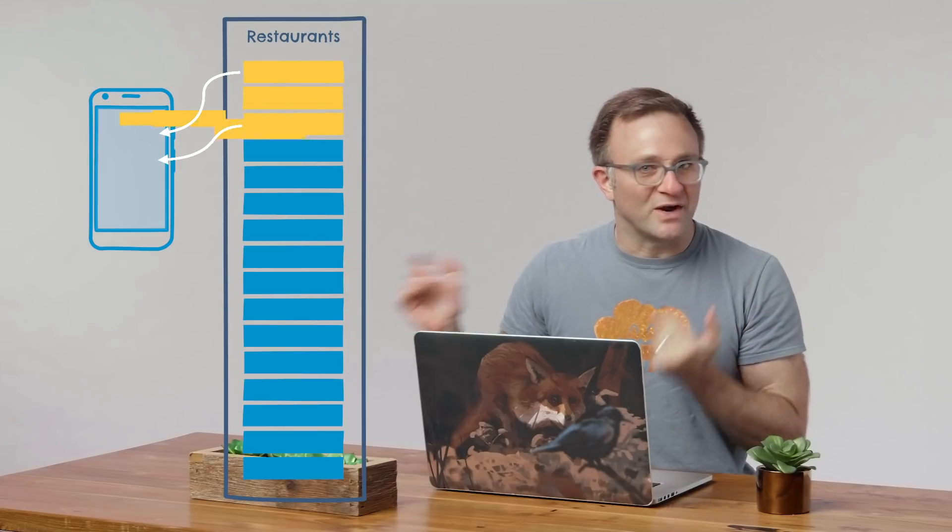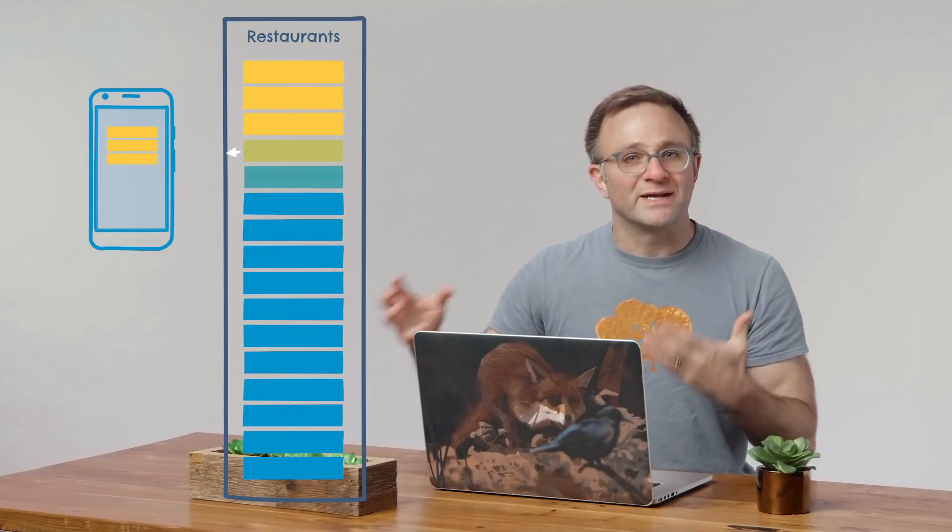So a much better solution here would be to send your user the first, say, 20 restaurants, then send over another 20 when they indicate they need more, either when they explicitly click a Next Page button or when you've noticed that they've scrolled down to the bottom of their current results for one of those infinitely scrolling table dealies. So let's look at how we might do this in Cloud Firestore.